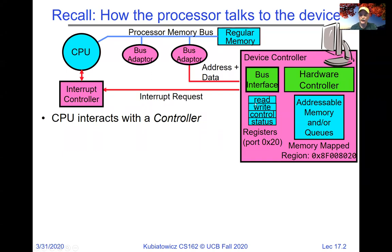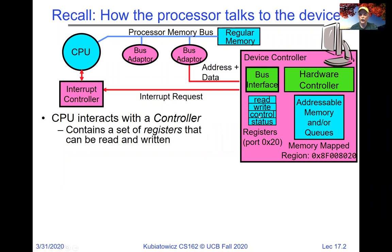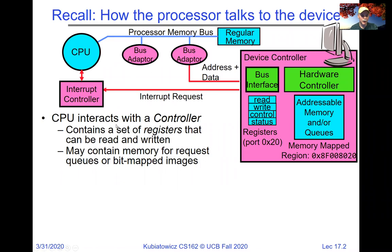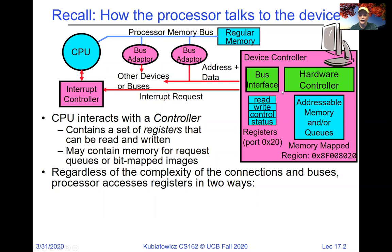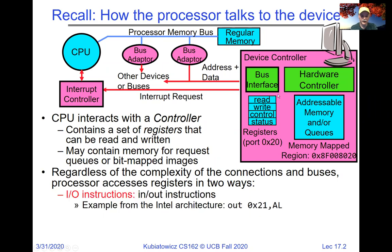A device controller has a couple of possible interfaces. One is a set of registers you can read and write that might control the device. On x86 devices, those registers are controlled with reads and writes using special instructions. Or we might have memory-mapped regions where we just read and write actual addresses and the control goes directly out to the device. This may contain memory for requests, queues, or bit-mapped image memory. Every device is a little different, but there are typically two ways of accessing things.